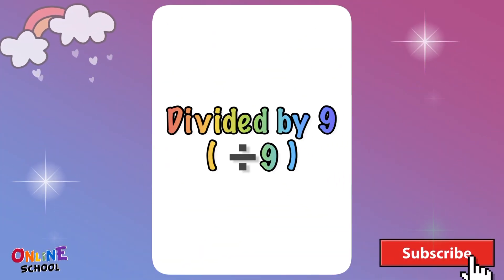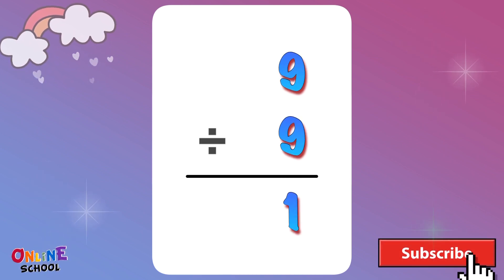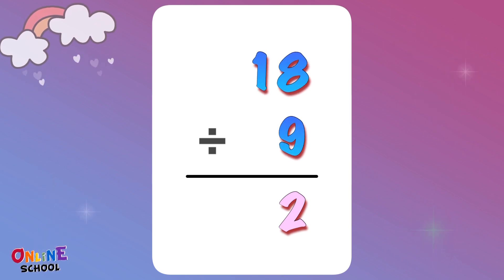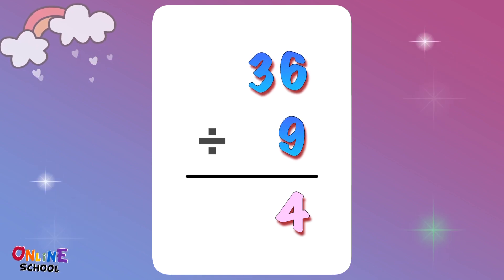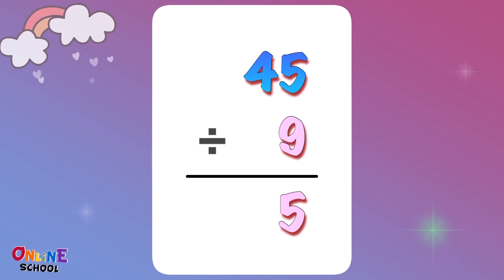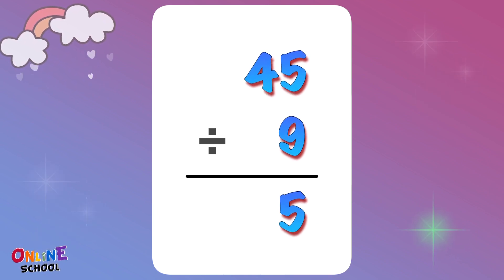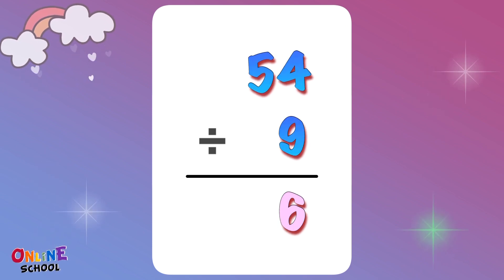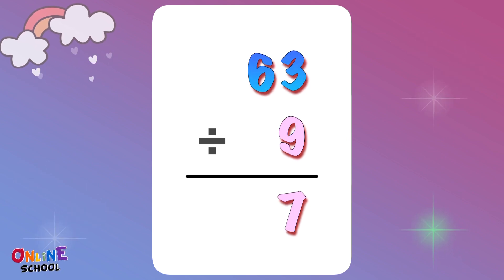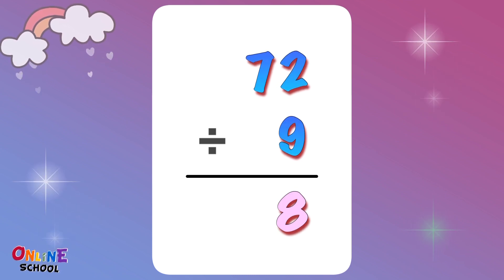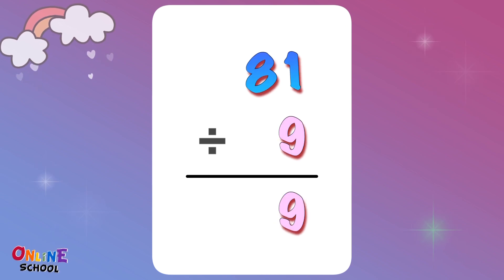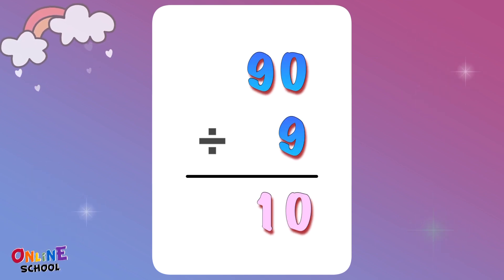Divided by 9. 9 divided by 9 equals 1. 18 divided by 9 equals 2. 27 divided by 9 equals 3. 36 divided by 9 equals 4. 45 divided by 9 equals 5. 54 divided by 9 equals 6. 63 divided by 9 equals 7. 72 divided by 9 equals 8. 81 divided by 9 equals 9. 90 divided by 9 equals 10.